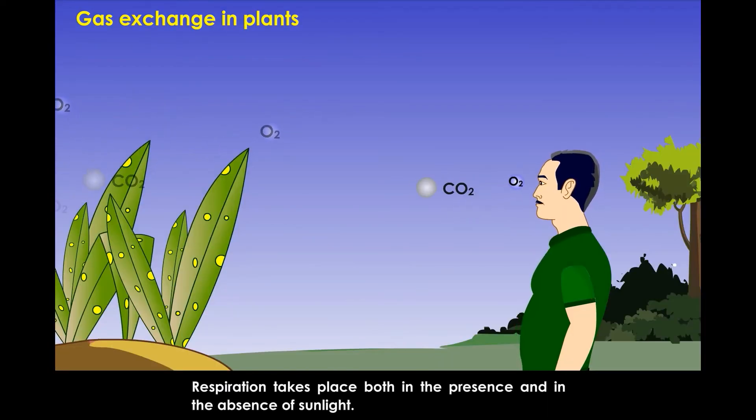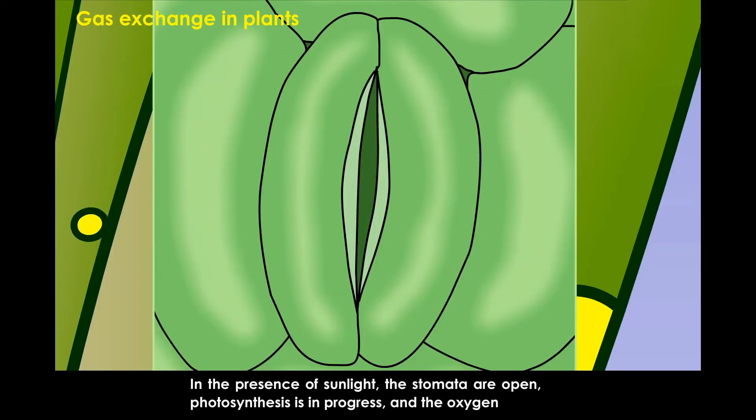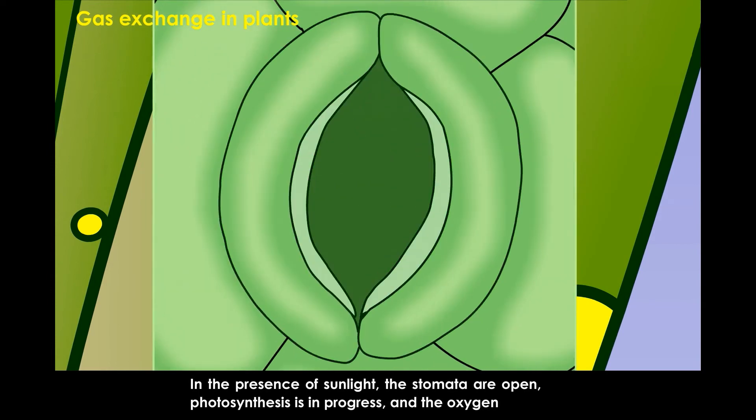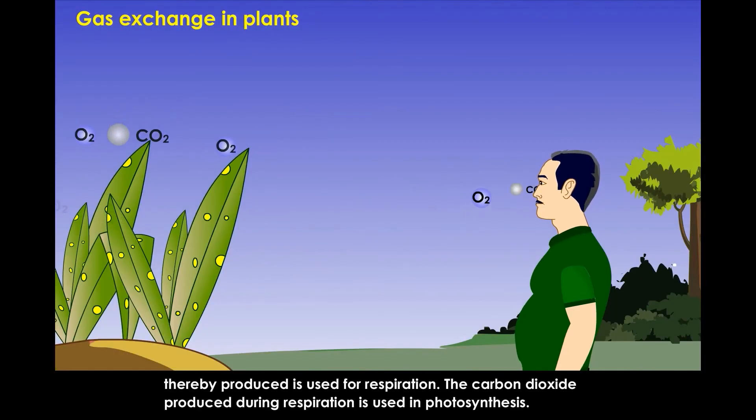Respiration takes place both in the presence and in the absence of sunlight. In the presence of sunlight, the stomata are open. Photosynthesis is in progress and the oxygen thereby produced is used for respiration. The carbon dioxide produced during respiration is used in photosynthesis. Excess gases formed are given out through stomata.